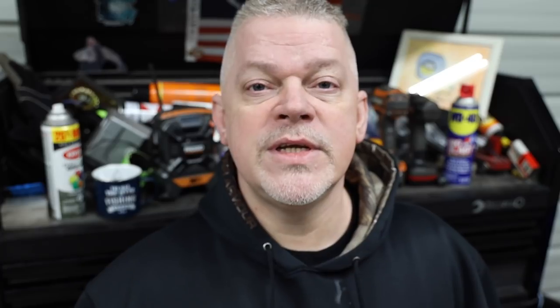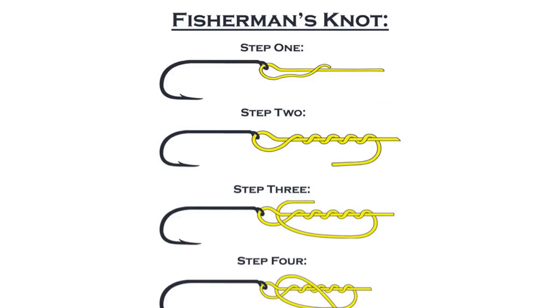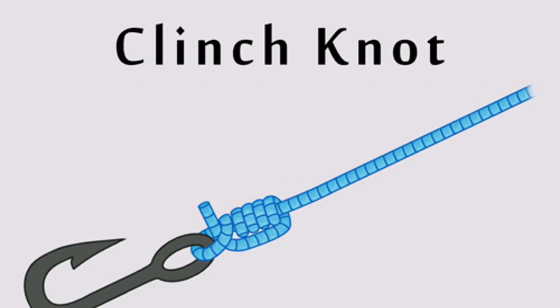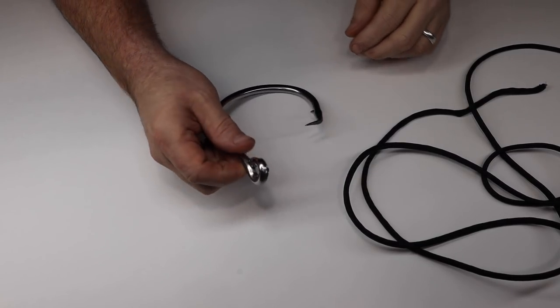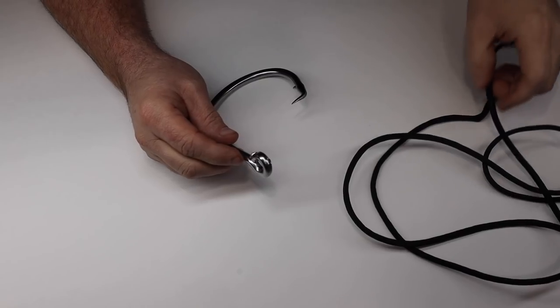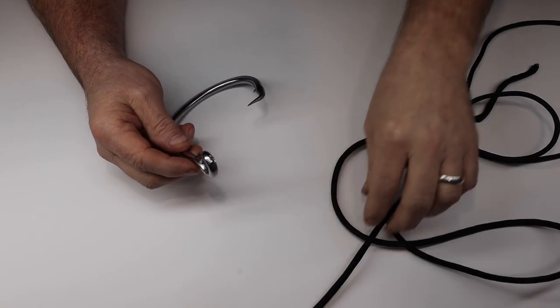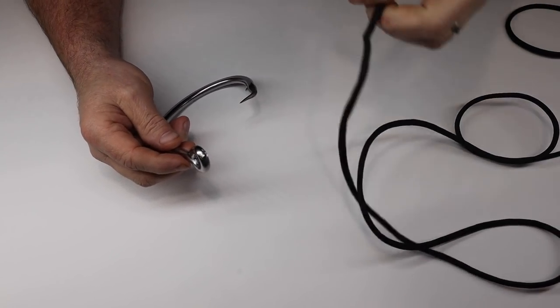Fishing knot number three, the fisherman's knot or the clinch knot. Now this knot will work in situations where the Palomar knot won't work. And it's called a clinch knot. When I grew up, we called it a fisherman's knot. It's the same thing. It also has a 96% knot strength, just like the Palomar knot.